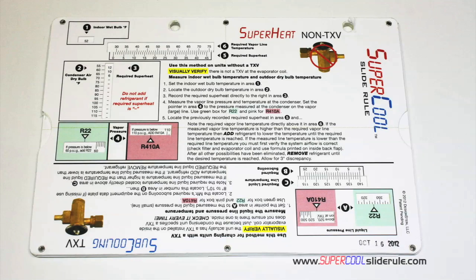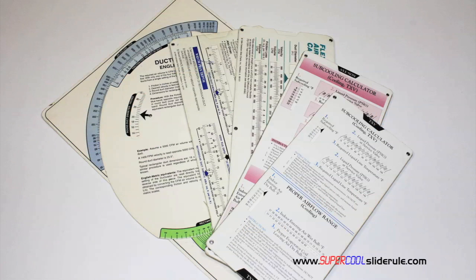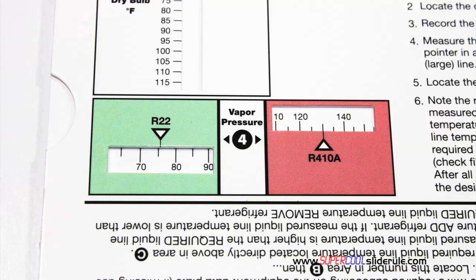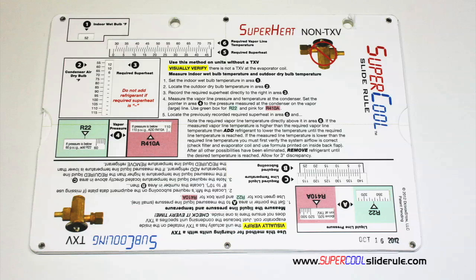I would like to take a minute to introduce you to the coolest tool in the HVAC industry. Historically, technicians have carried four or five different slide rules — one for R22, one for R410A, one for metal duct sizing, one for flexible duct sizing, and yet others for diagnostics or troubleshooting. Thankfully those days are gone. This one tool will allow you to charge a system with R22 or R410A in either the superheat or subcooling method.